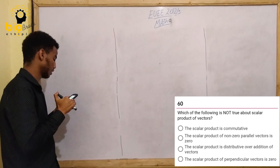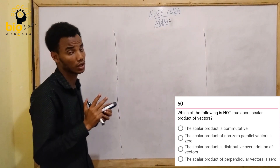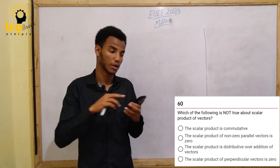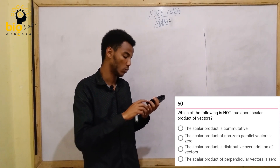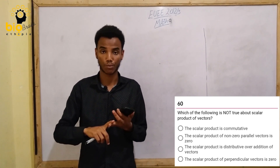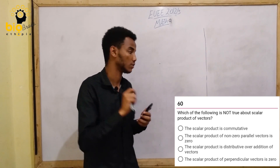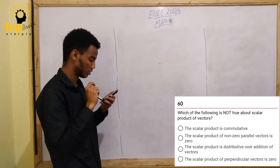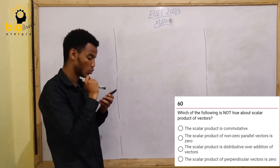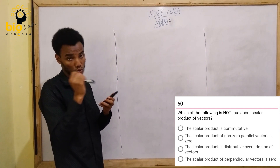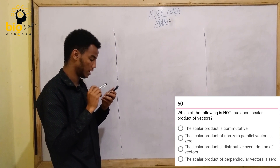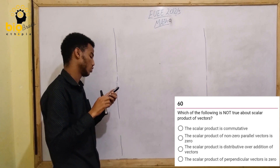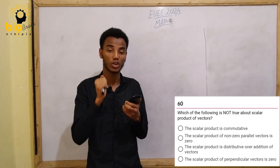The scalar product of vectors is also called the dot product. When it comes to the cross product, that is called the vector product. The scalar product is commutative — that is true. The scalar product of perpendicular vectors is zero.